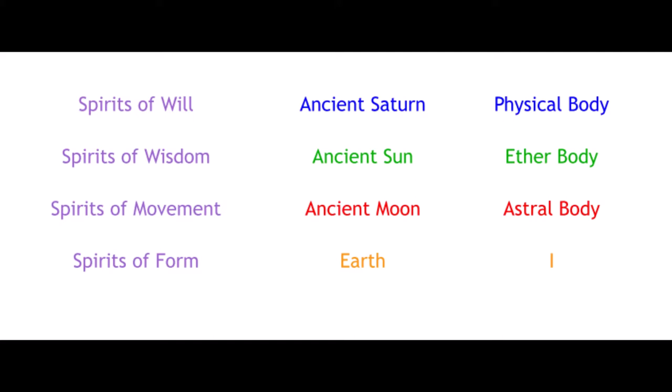In mythology, all of these beings are generally termed Gods. In the Bible and other traditions, they have other names. The animal impulse of Astrality was given by the so-called Spirits of Movement in a more distant past, when they had already reached the level where the Spirits of Form are now.